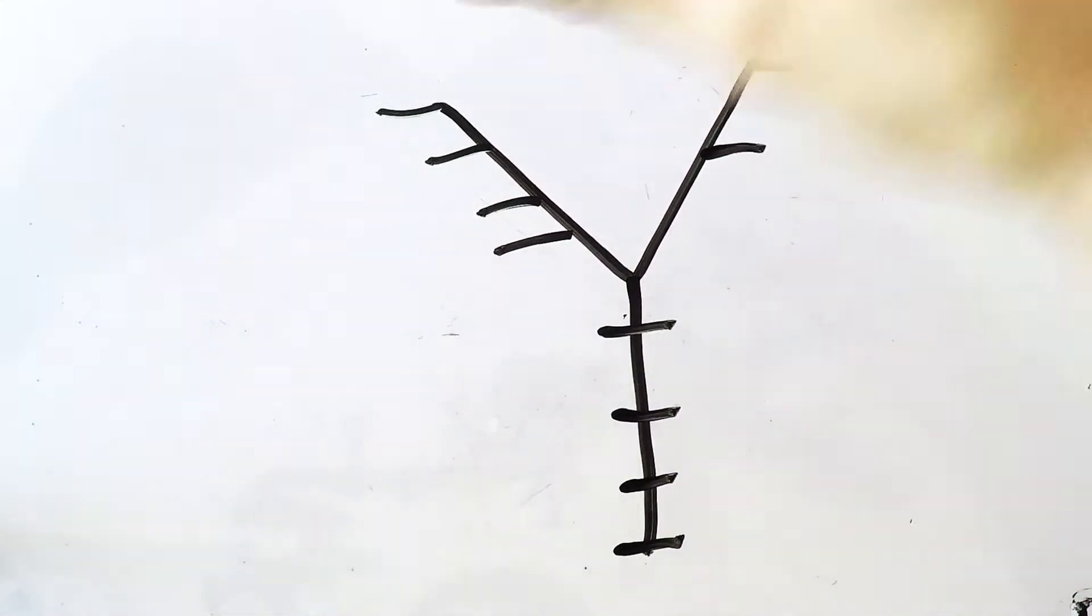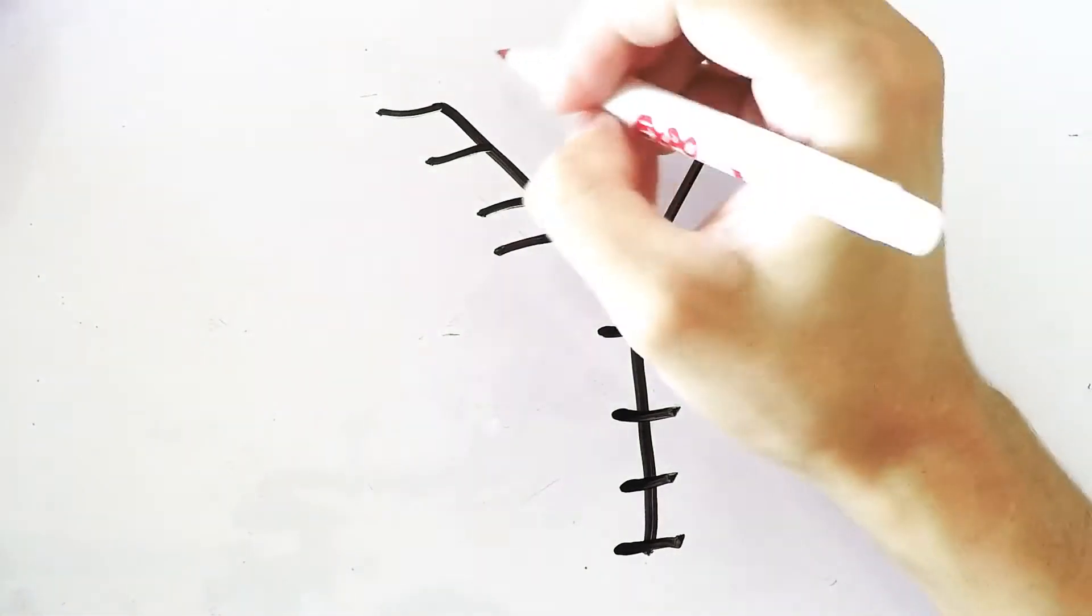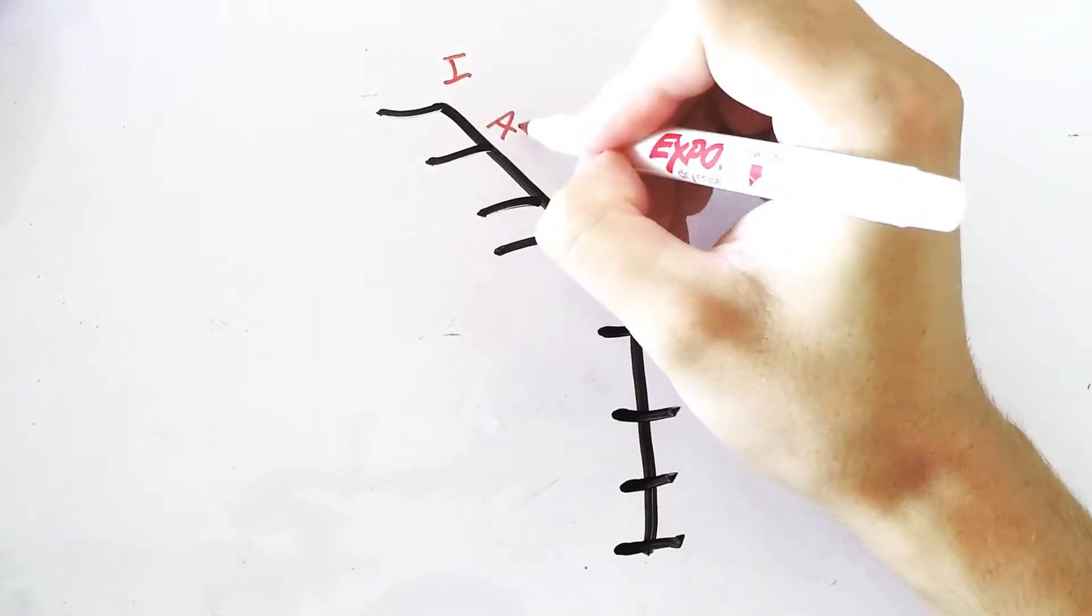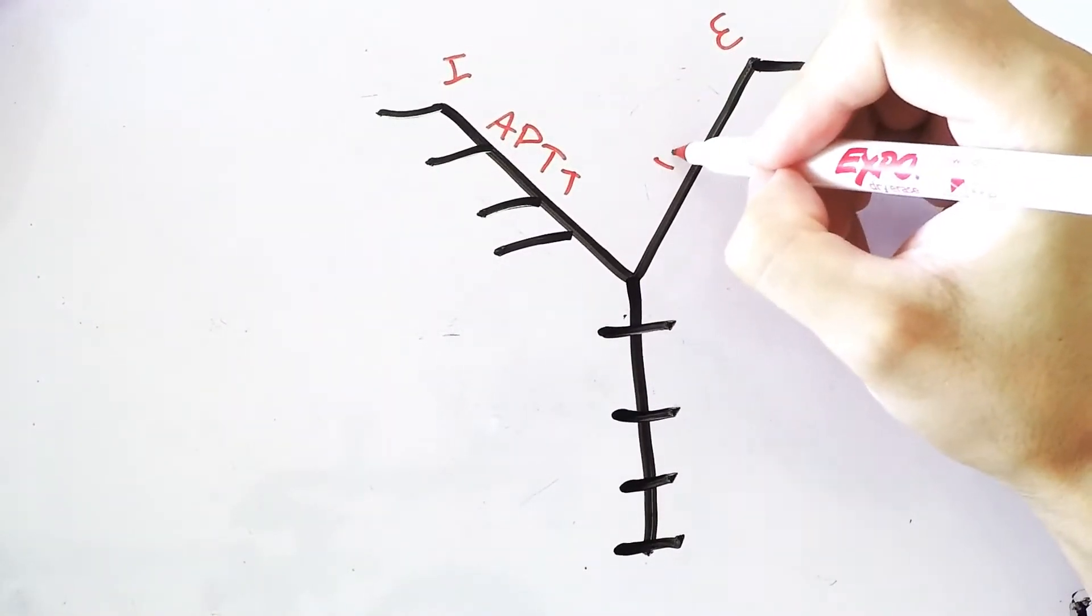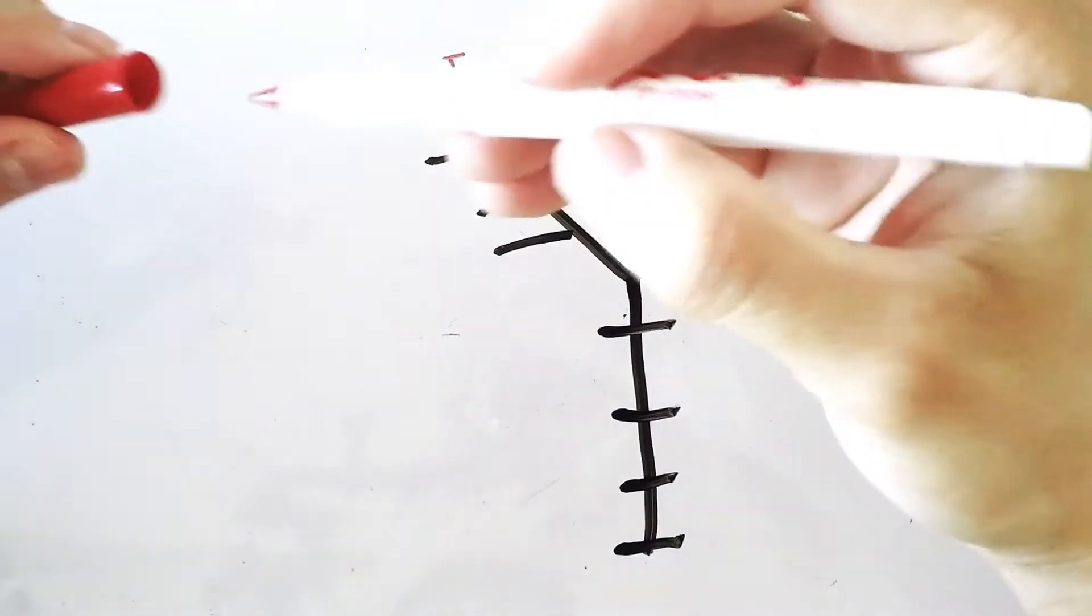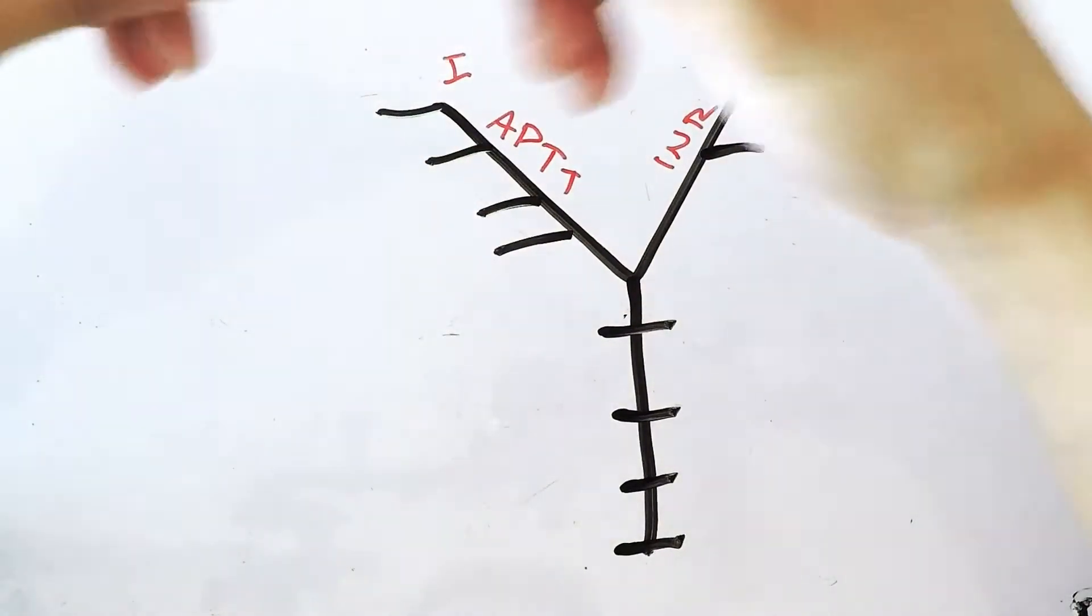As you can already tell I'm separating my pathways so the right side is going to be your extrinsic, left side is going to be your intrinsic. If you know your lab values I just write it over here your APTT and your INR. Those are the ones you're looking for an increase on.